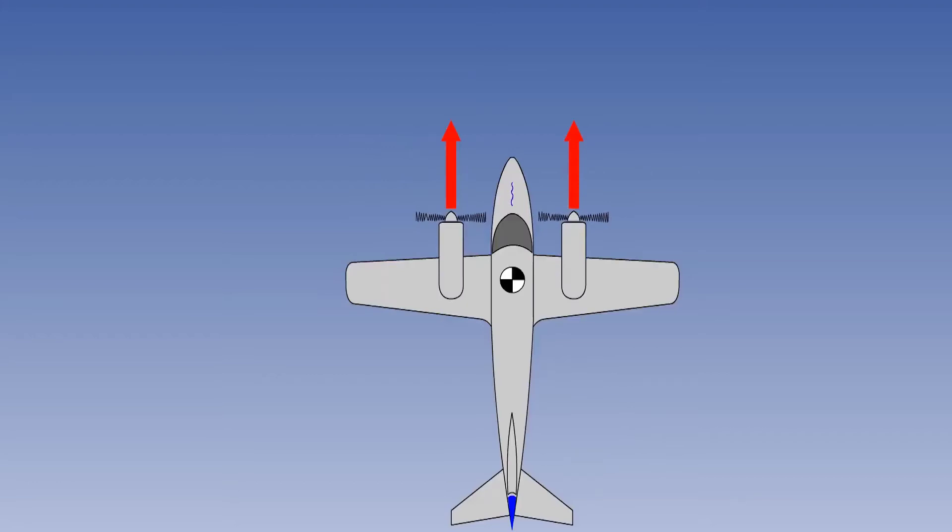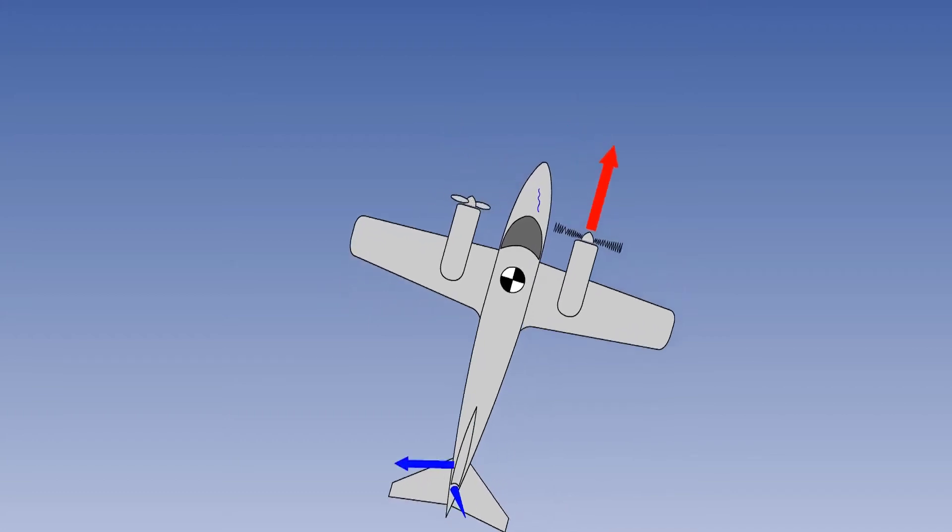Whenever an engine failure occurs on a multi-engine aircraft, the first thing the pilot must do is stop the yaw with rudder. Asymmetric thrust will be fully covered in later lessons.